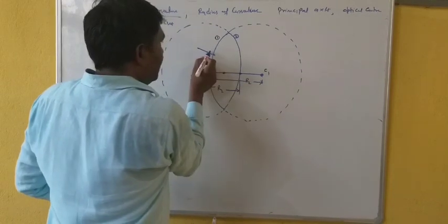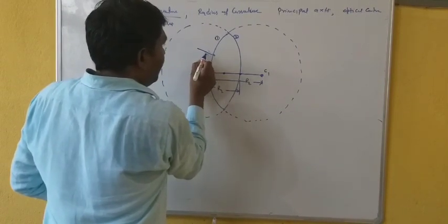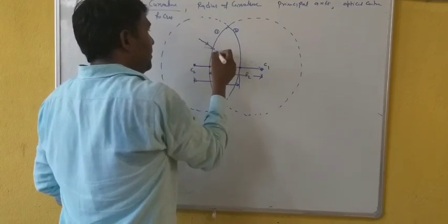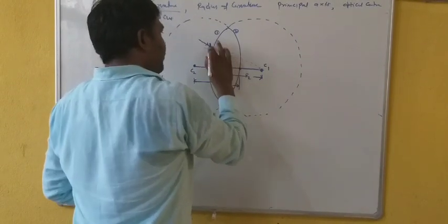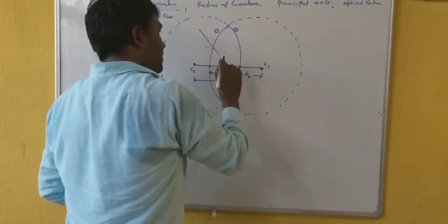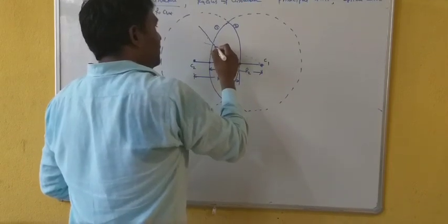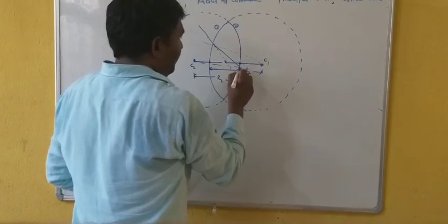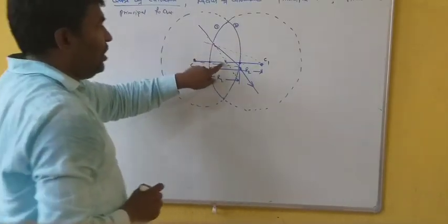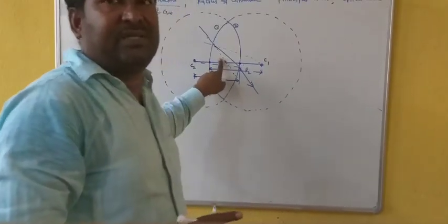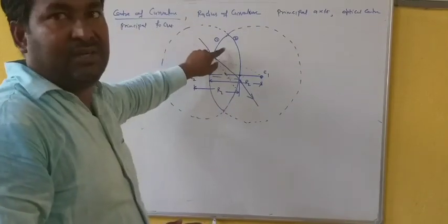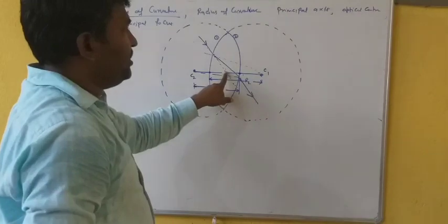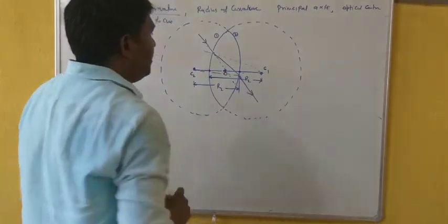There will be a normal at this point. If a light ray is incident along this direction, focusing along the center of curvature, it will bend towards the normal. And here at this point it will move away — that is why it will become parallel. So the optical center is the point on the principal axis through which a ray passes without net deviation.